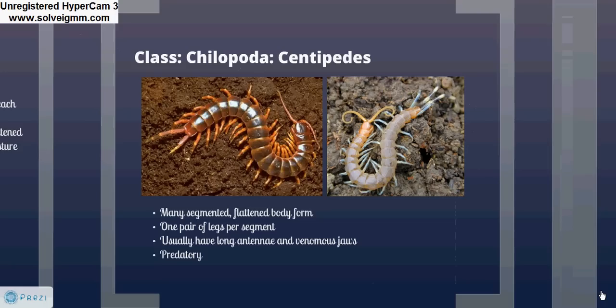Centipedes, on the other hand, also have a segmented body but are usually more flattened in form. They have one pair of legs per segment, unlike the millipedes that have two. They often have long antennae and venomous jaws that are easily visible, and they do not curl into the defensive posture that millipedes assume. While generally harmless, centipedes are predatory and have venomous jaws that can give a painful bite — this is one arthropod you probably don't want to handle.